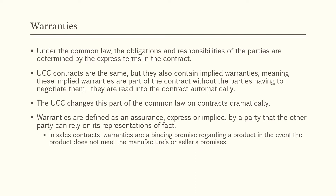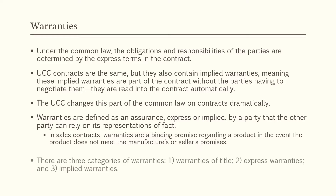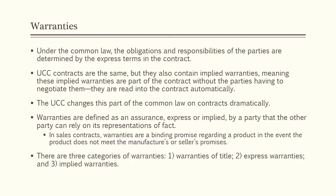Warranties are defined as an assurance, express or implied, by a party that the other party can rely on its representations. In sales contracts, warranties are a binding promise regarding a product in the event the product does not meet the manufacturer's or seller's promises. There are three categories of warranties: warranties of title, express warranties, and implied warranties.